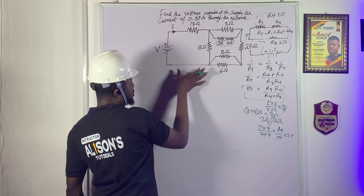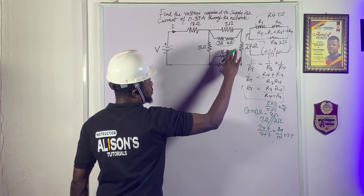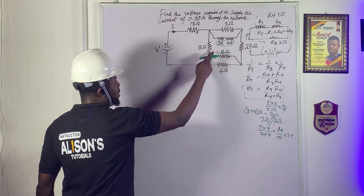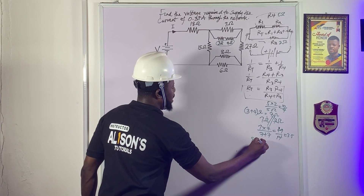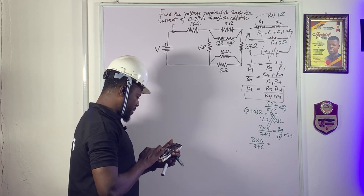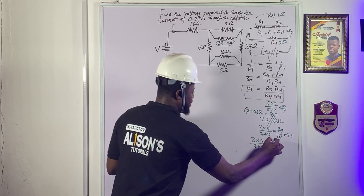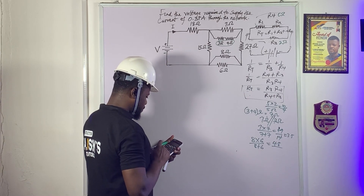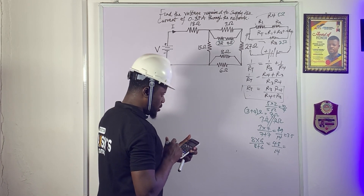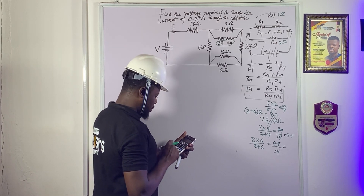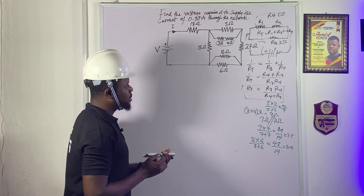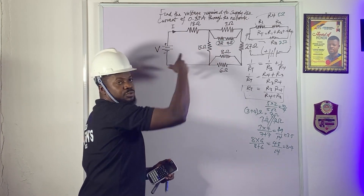Now this 8-ohm resistor is in parallel with this 6-ohm resistor — they are not in series. For this parallel combination: (8 × 6) / (8 + 6) = 48 / 14 ≈ 3.4 ohms. So we've now analyzed both parallel combinations and have their equivalent resistances.